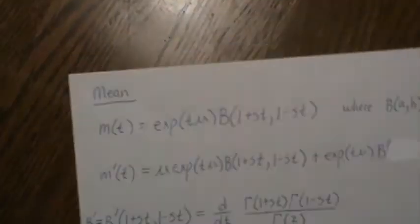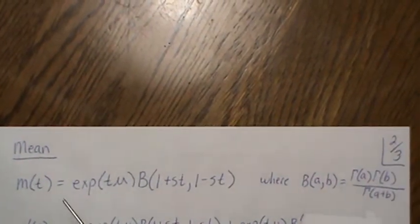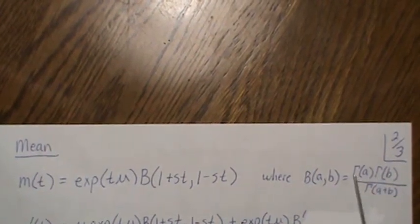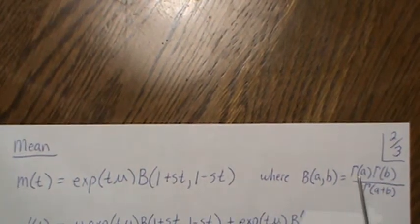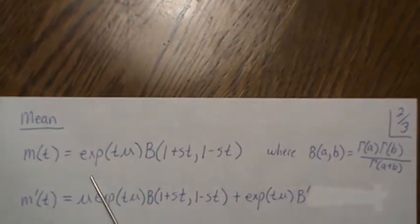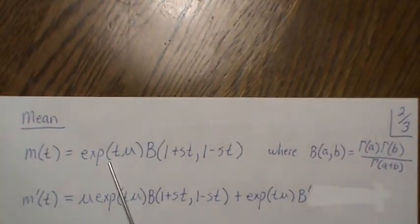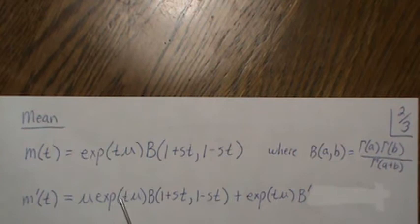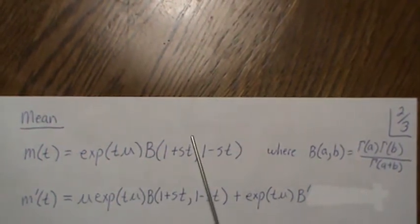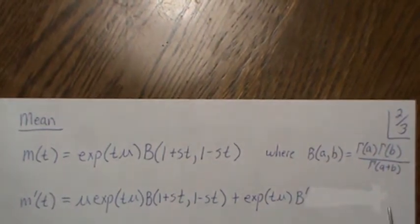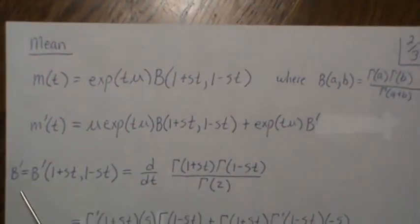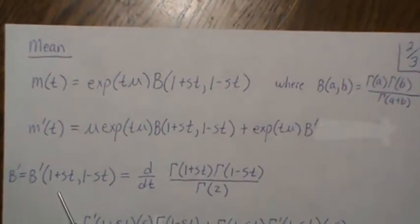Now let's use this to derive the mean and the variance. I just rewrote the moment-generating function. To remind you, the beta function is beta of AB equals gamma of A times gamma of B over gamma of A plus B. When we take the derivative to find the mean, it's the derivative of the first part, which gives an extra mu by the chain rule, times the second term, plus this first term times the derivative of the beta function — we'll call it B prime.